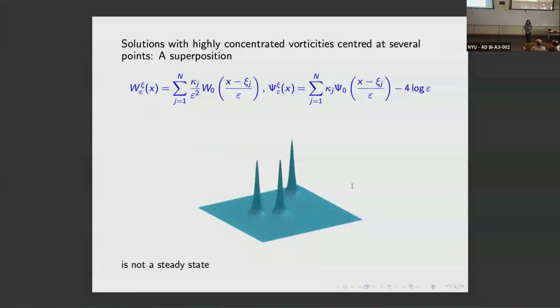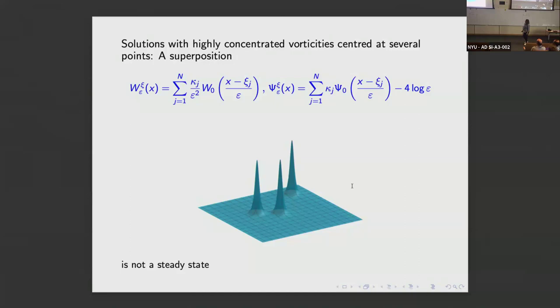You may ask whether you can analyze a solution with vorticity concentrated not just in one point, but in several points. A natural way to imagine this is to take one concentrated solution like the one described before and center it at different points, then add them via superposition. But a superposition of this object doesn't give you a steady state — it was proved by Liouville that you cannot get a steady state like that. However, you can allow the points, the centers where the vorticity is concentrated, to move in time — so it's no longer a steady state.